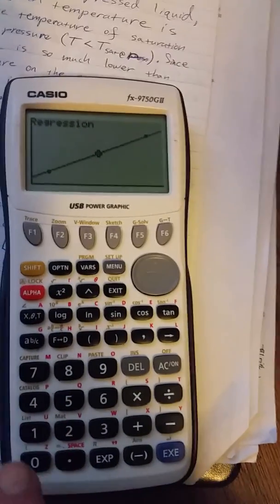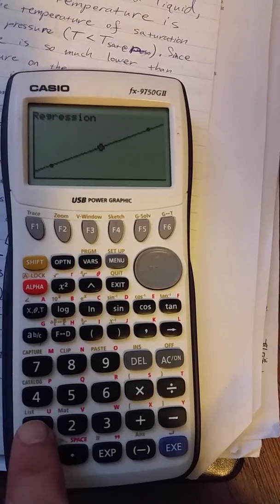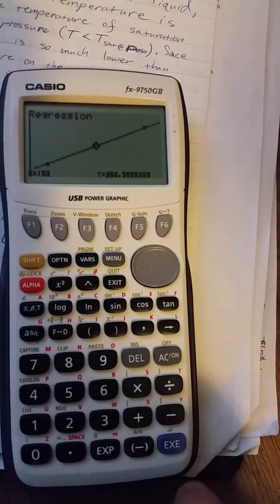Now it's just going to sit there, so we're going to punch in our x value. Now remember that given temperature is our given X, so we're going to punch in 150 because they gave us 150 degrees Fahrenheit. And boom.